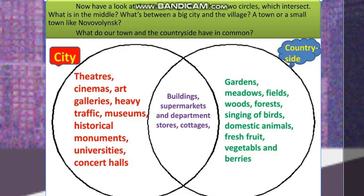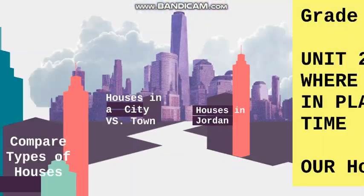In the countryside or the town, we can see gardens, meadows, fields, wood, forests, singing of birds, domestic animals, fresh fruit, vegetables, and berries. While in a big city, we can see theaters, cinemas, art galleries, heavy traffic, museums, historical monuments, universities, and concert halls — which we don't see in towns.